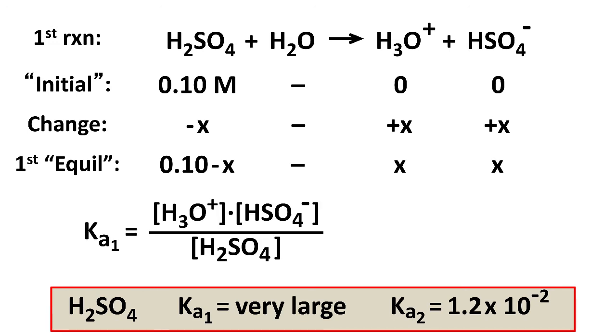And so what that means is, even though we can write an equilibrium constant expression, because that's a huge number, that means that the products are big by comparison to the reactant, which is small, essentially zero.